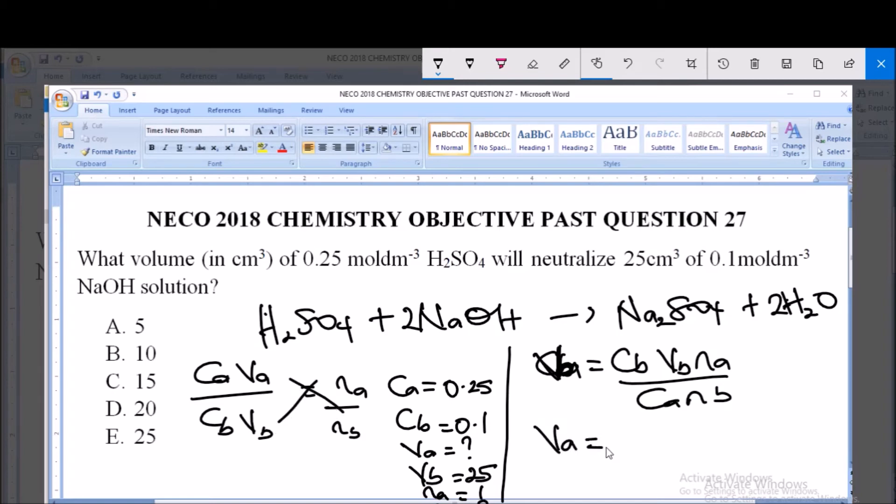So we have that VA, the volume of the acid, equals 0.1 multiplied by 25 multiplied by 1, all over 0.25 multiplied by 2. Now this equals 2.5 over 0.5, and this equals 5 cm³.